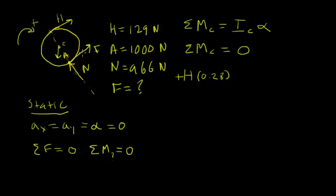Force F, however, that is a force that's going to have a moment about point C. So, the force F will have a moment about point C. Its moment arm is also the radius of the wheel, that perpendicular distance. So, 0.28 meters.